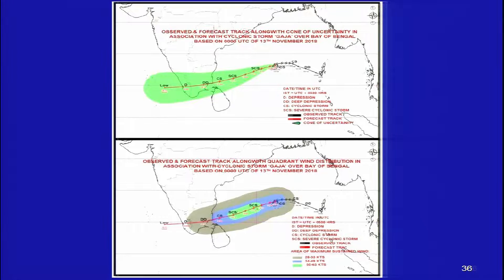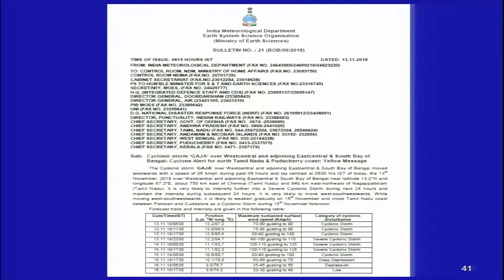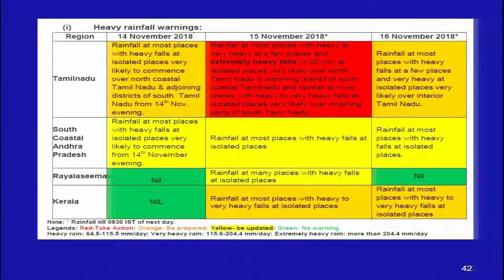This is a bulletin issued by the Indian Meteorological Department, under the Ministry of Earth Sciences, which provides the time, date, and latitude-longitude coordinates of the cyclone, along with expected wind speed and the category of cyclonic disturbance — either cyclonic storm or severe cyclonic storm. These warnings are regularly issued. The table also shows heavy rainfall warnings issued from 14th to 16th November.